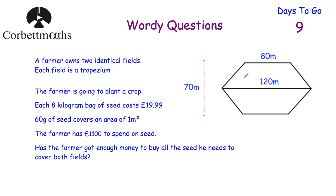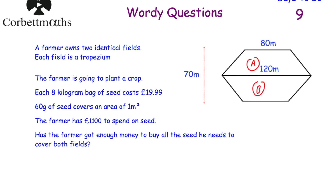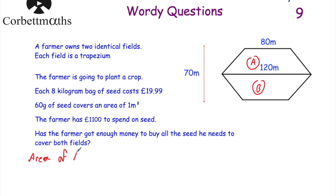The farmer owns two fields and he's going to plant a crop. It takes 60g of seed to cover 1m², and he has £1,100. We need to find the area of the fields first, then work out how much seed he needs, how many bags he'll need to buy, the total cost, and whether he has enough money. Let's start with the area of trapezium A. The formula is: area = ½(a + b) × h. The two parallel sides are 80m and 120m, and the perpendicular height is 35m.